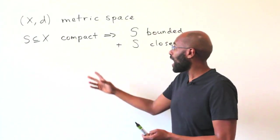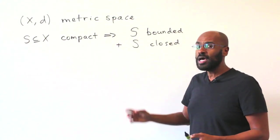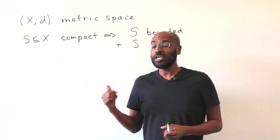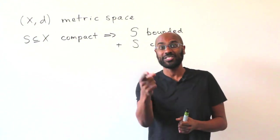In many analysis books that present why a compact set in a metric space is both closed and bounded, their proofs are kind of long. Here, we're going to give shorter proofs of why both of these facts are true.